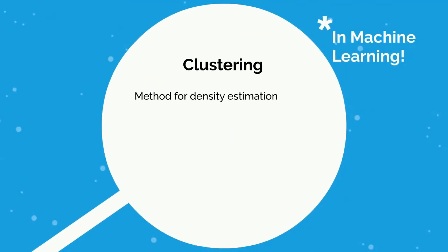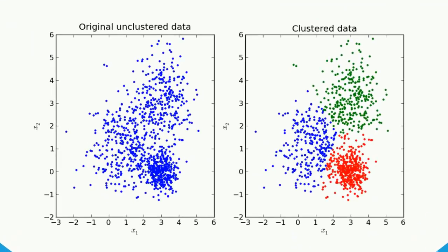In statistics, this is called density estimation. In machine learning, it's called clustering — you may have heard of k-means clustering. Clustering is the primary function of unsupervised learning and is really a method for density estimation. The aim is to find clusters or groups of inputs that naturally separate from each other. On the left you see original unclustered data; on the right, it's pretty obvious that the data can be separated into three distinct clusters.